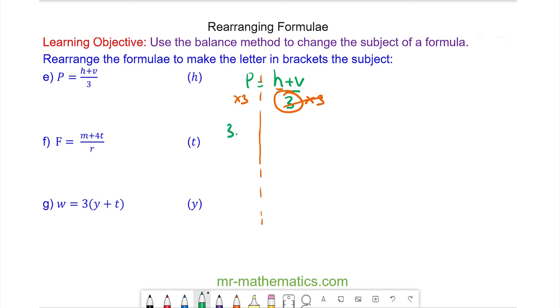So I have 3p equals h plus v. I do the opposite of adding v which is taking v away. So I'm left with 3p minus v equals h.